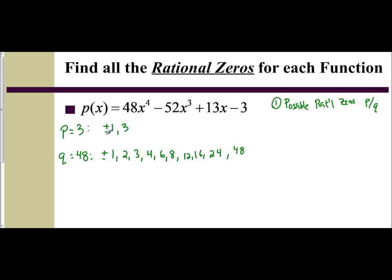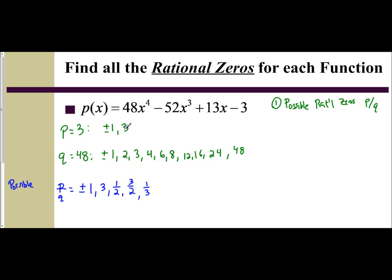So that is all the p factors and q factors. Now we create the p over q list, which gives us our possible rational zeros. Each value in p is going to be divided by every q. So 1 divided by 1 and 3 divided by 1 gives plus or minus 1 and 3. You get 1 divided by 2 and 3 divided by 2 — that's 1 half and 3 halves. 1 divided by 3 is 1 third. And when I take 3 and divide by 3, I get 1, which is already accounted for.